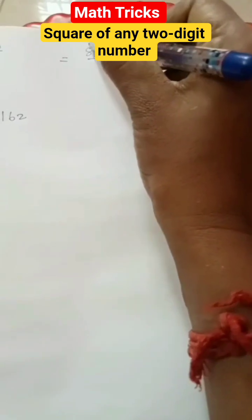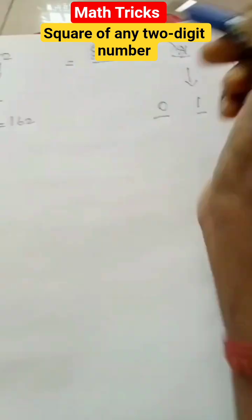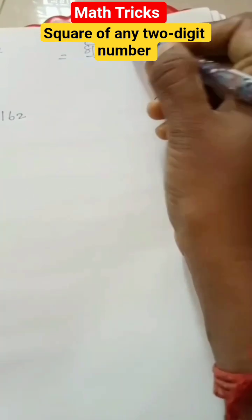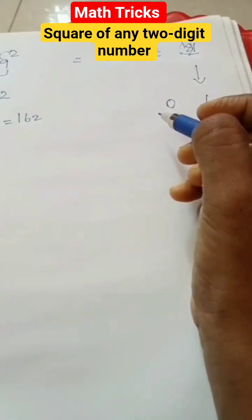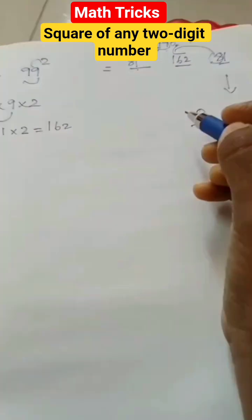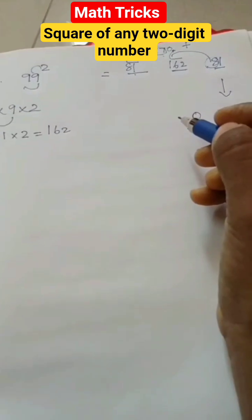Next part is add, 81 plus 17, 81 plus 17 is 98.